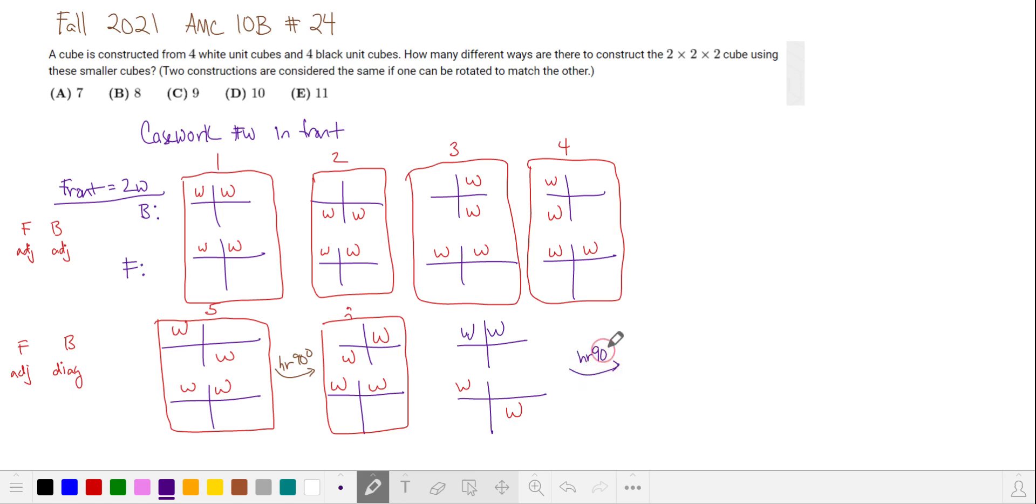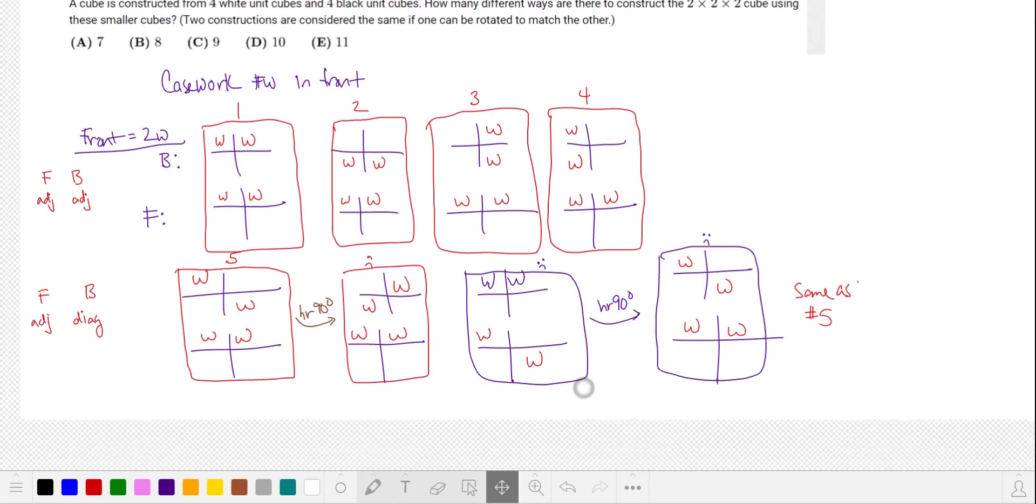Let's take a look at diagonal in front and a couple of whites in the back. Again, if we do a horizontal 90 degree rotation, see what happens to our white squares. This moves here, that one moves here, this one moves to the left, and this one moves to the front. Getting pretty good at this. It turns out this is the same as number five. I will circle this and put an unhappy face.